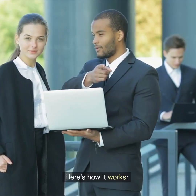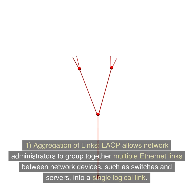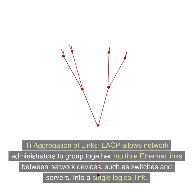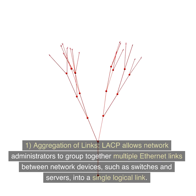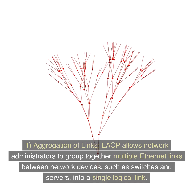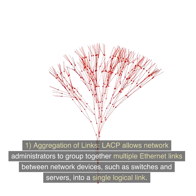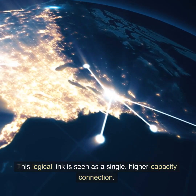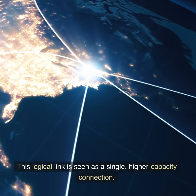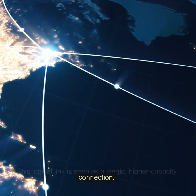Here's how it works. 1. Aggregation of Links: LACP allows network administrators to group together multiple Ethernet links between network devices, such as switches and servers, into a single logical link. This logical link is seen as a single, higher capacity connection.